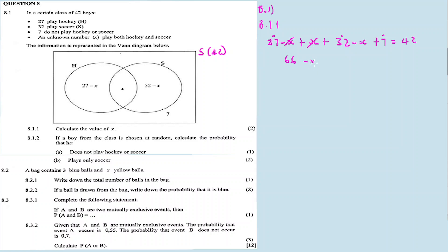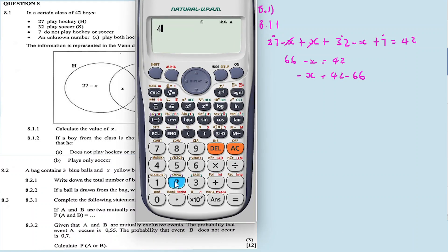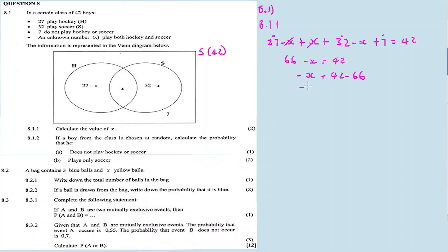The x terms cancel to give minus x, so: 66 minus x equals 42, therefore minus x equals 42 minus 66, which gives minus x equals negative 24, so x equals 24.